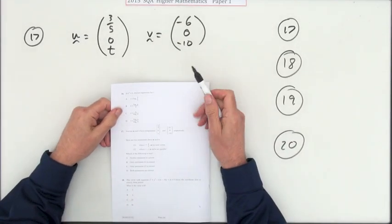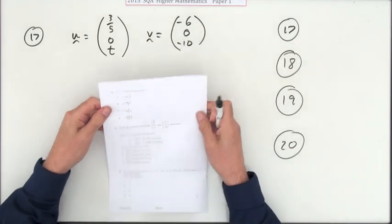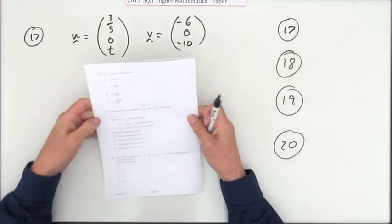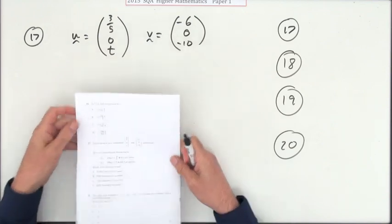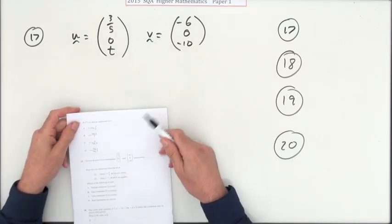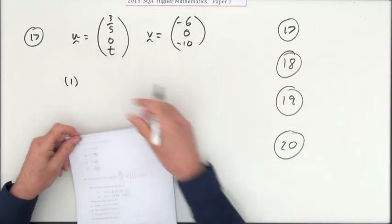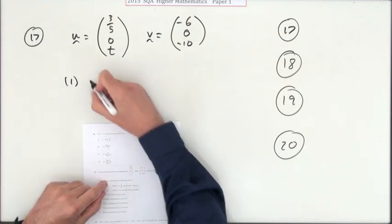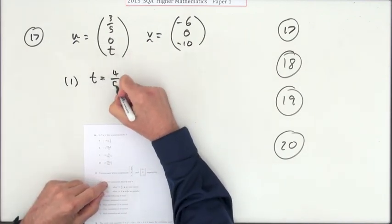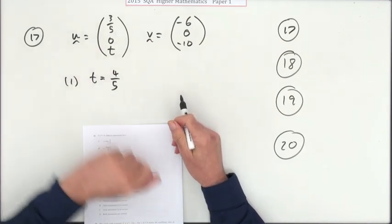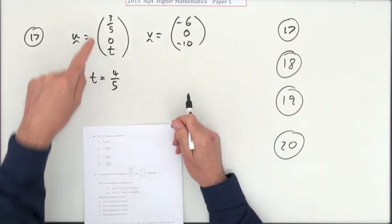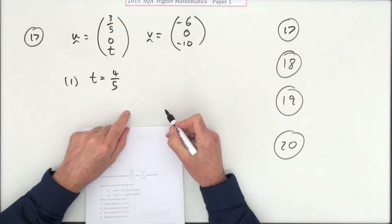Number 17 from the multiple choice in paper one of the 2015 old higher. We have the components of two vectors and two statements, another multiple selection. First one: if t is four-fifths, then this is a unit vector. Unit vector means its magnitude is one.